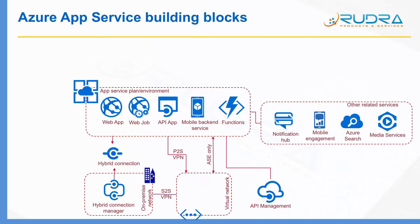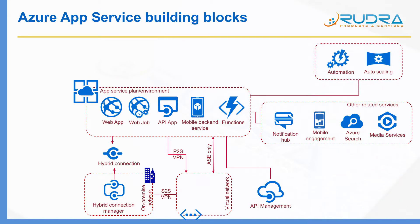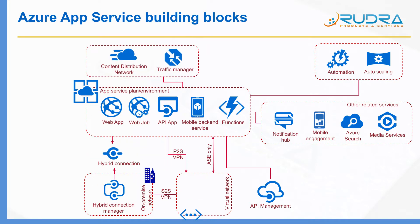We need to scale App Service Plan according to the incoming load. In order to achieve that, you can use automation and auto-scaling. Using auto-scaling, you can scale in or scale out. Using automation, you can scale up or scale down. With the combination of automation and auto-scaling, you will be able to scale your App Service Plan according to the load on your hosted apps. In terms of providing performance and high availability, you can use Content Distribution Network and Traffic Manager.